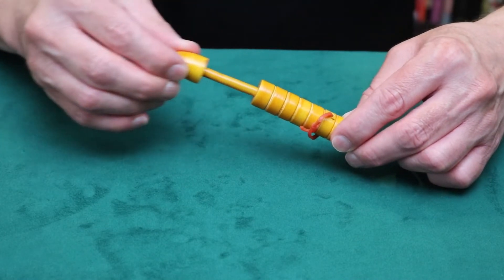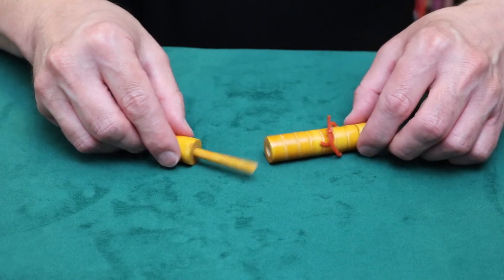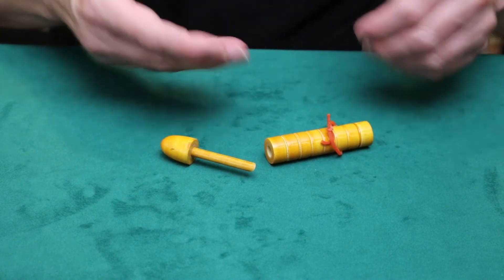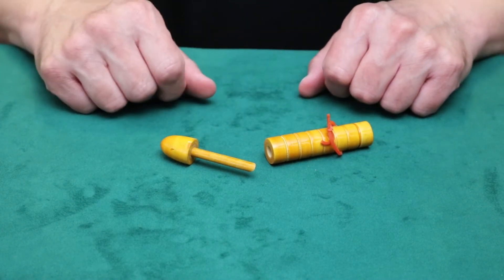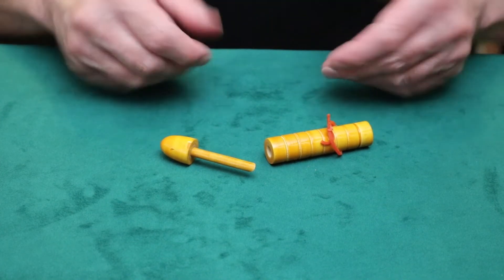Now when you unhook it and you hand this to your friends, guess what? They can't do it. No matter how hard they try, no matter how many times they try, they can't hook the rubber band unless they know the secret. This is the Snapper.